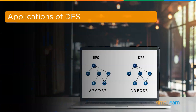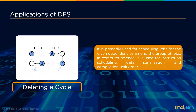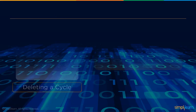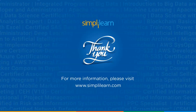DFS is primarily used for scheduling jobs based on dependencies among a group of jobs. In computer science it is used for instruction scheduling, data serialization, and compilation task ordering. DFS can also be adapted to search all solutions to a maze, including nodes in an existing path in the visited set.